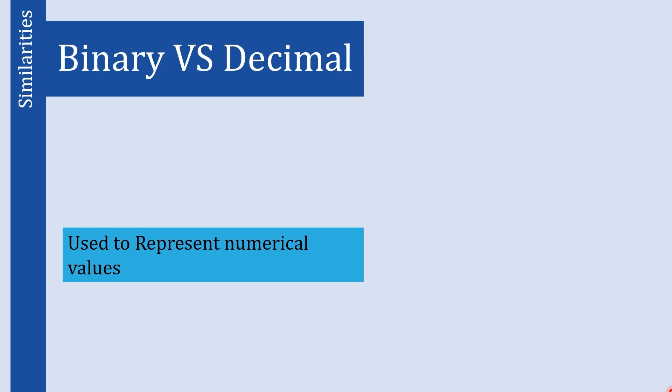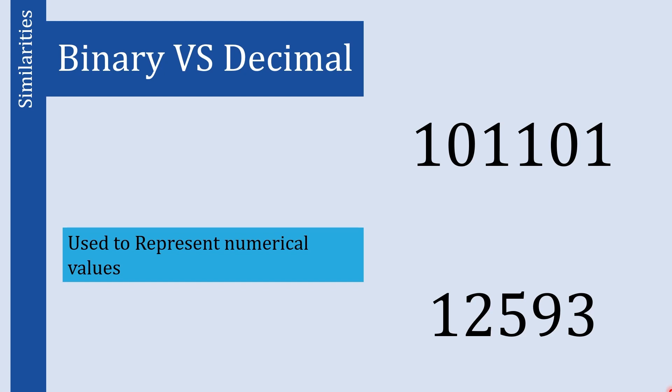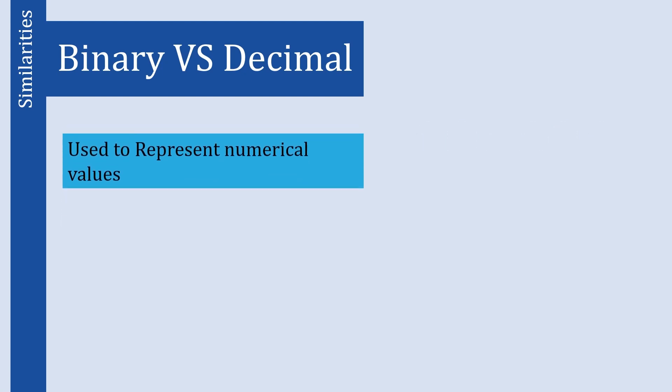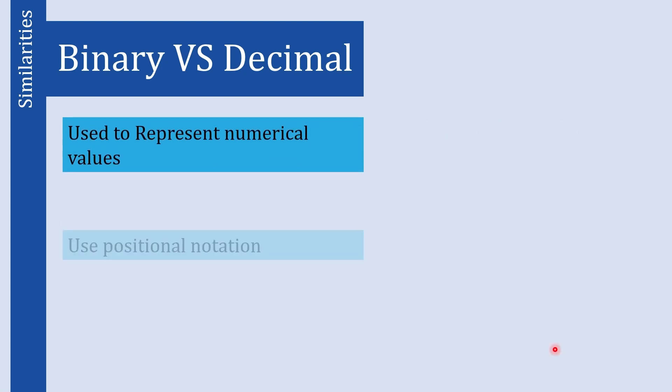Both the binary and decimal number systems are used to represent numerical values. For example, this is the binary number 101101 and this is the decimal number 12593. So both are used to represent numerical values.